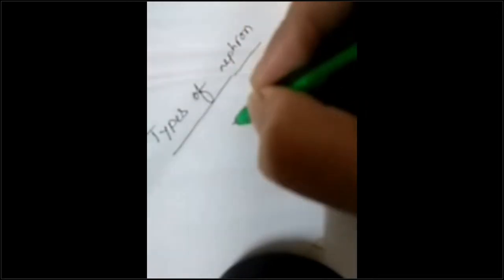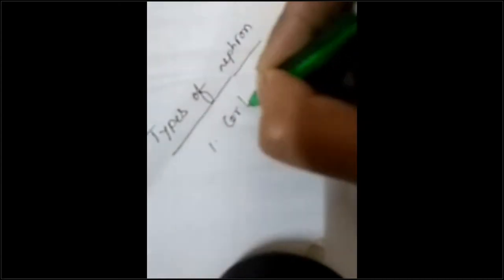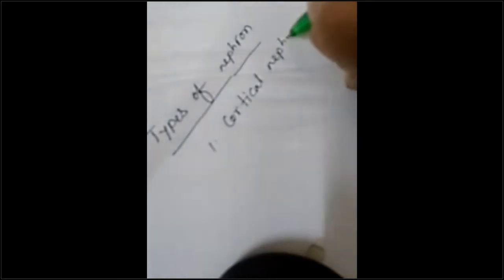Today we discuss about the types of nephron. What are the types of nephron? There are two types of nephron. First of all, the cortical nephron, then the juxtamedullary nephron.